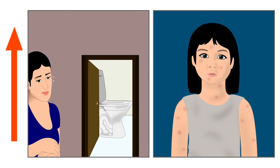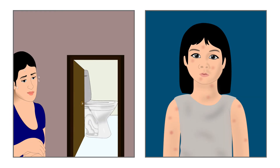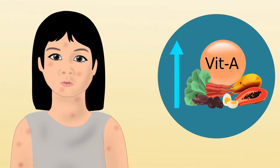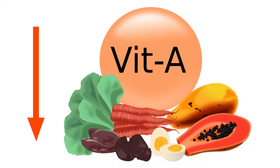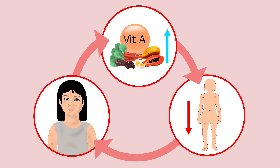Another major consequence of vitamin A deficiency is an increased risk of severe infections, such as diarrhea and measles. Infection further increases the body's demand for vitamin A, making the deficiency worse. As a result, a vicious cycle of deficiency and infection occurs.